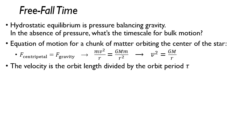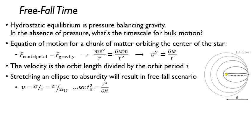The velocity that our object is moving is the length of the orbit divided by the orbit period. Instead of thinking of a circular orbit, you can stretch this ellipse to an extreme point - basically just a straight line. So the orbit length is two times some radius divided by the period, and the period itself is two times the freefall time, because you're falling in and coming back out.